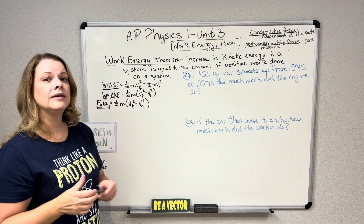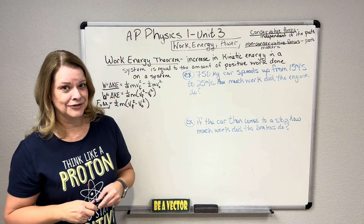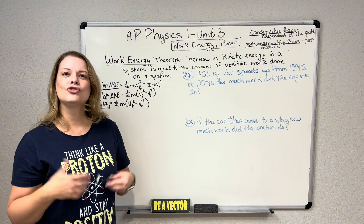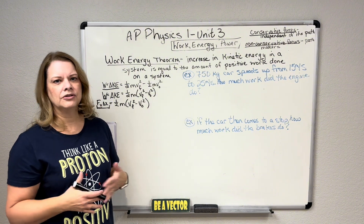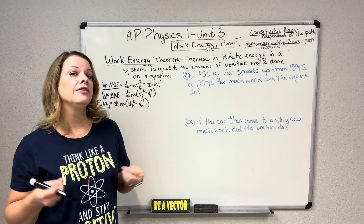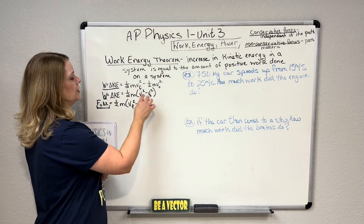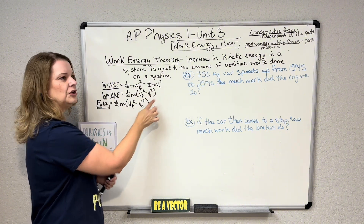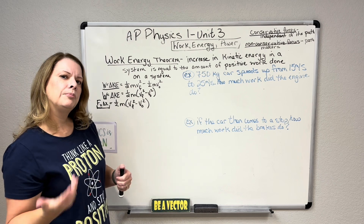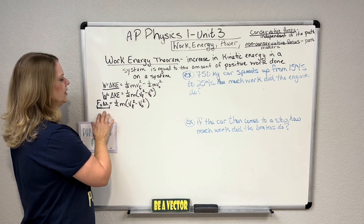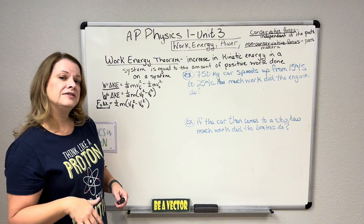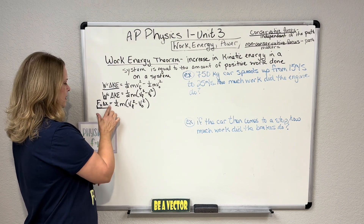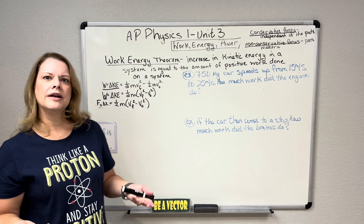We're adding more and more things to our equation tool belt, and it gets more difficult to know which equation to pull out to start a problem. Let the problem guide you. A strategy: if you see a change in velocity and they're asking for work, you're going to use the work energy theorem. If they give you a change in velocity and ask for the force that did the work to create that change, then you're going to use the force times displacement form.